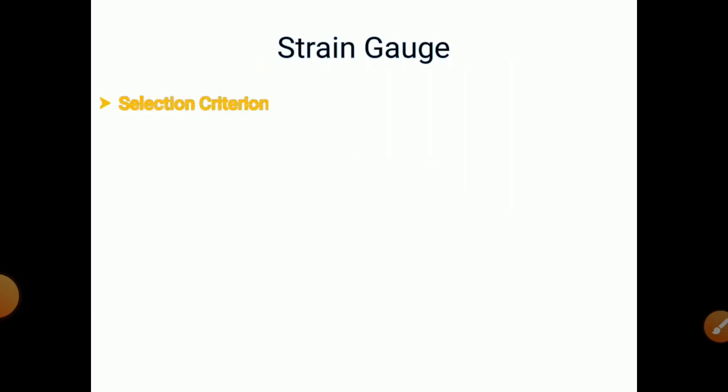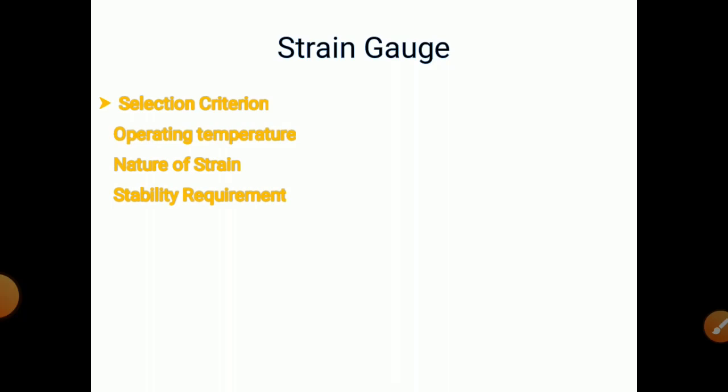The strain gauge selection criteria are: one is operating temperature, one is nature of strain, and one is stability requirement. Operating temperature is very important — whether it is a changing temperature or a constant temperature in the measurement area. Second is strain — what kind of strain is going to develop — and stability requirements.